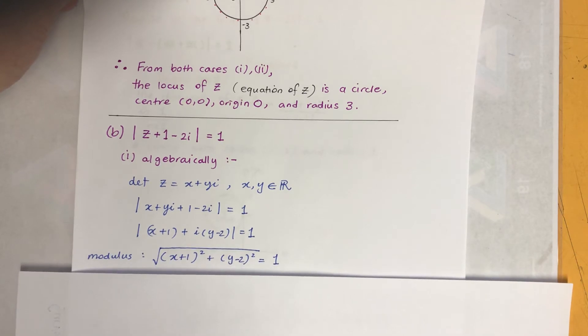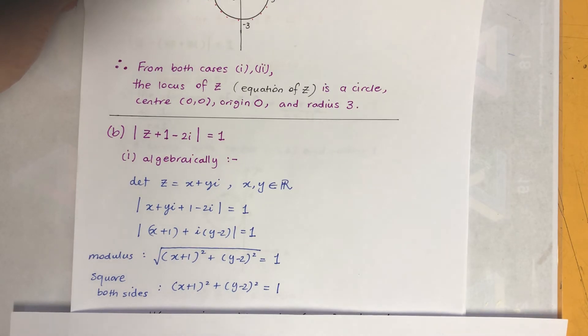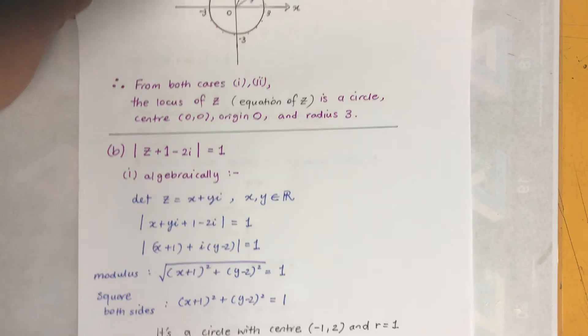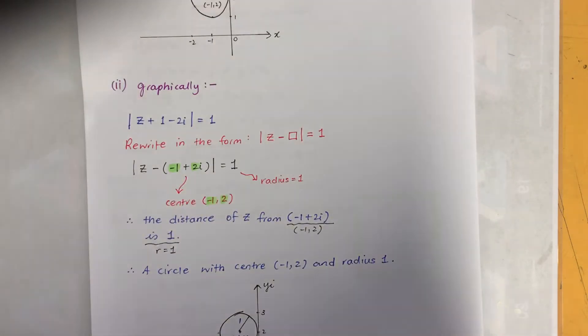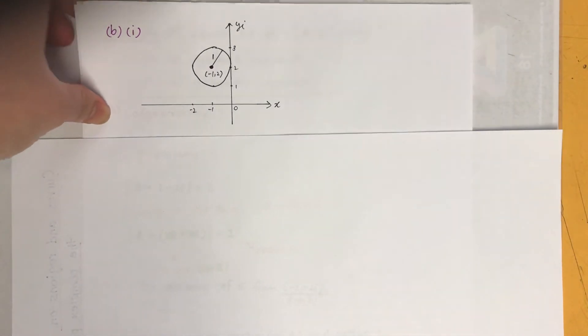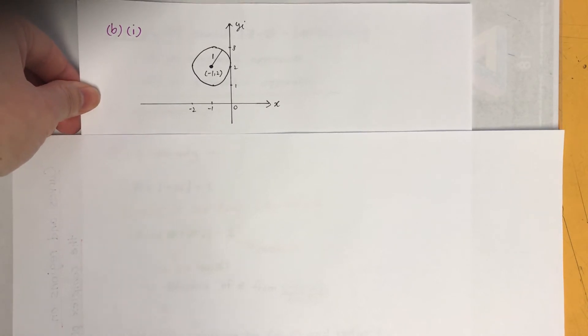And obviously we're doing modulus with that because this absolute value of that is modulus. And we square both sides, there you go. We got a circle, but this time the center is not origin, it's minus 1 and 2, radius is 1. So if I sketch that I will get something like this.